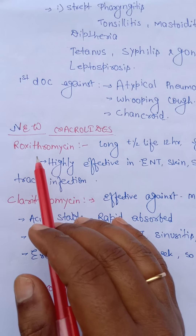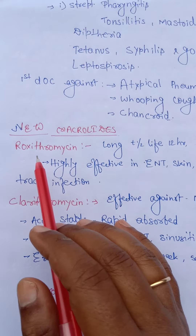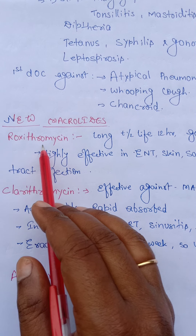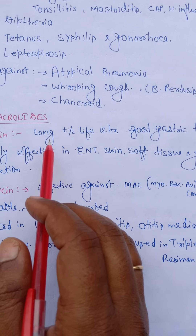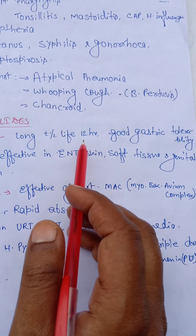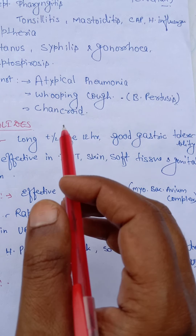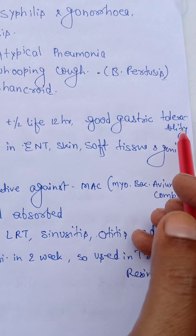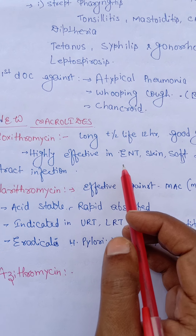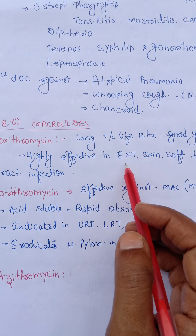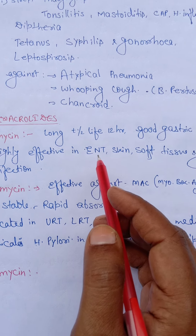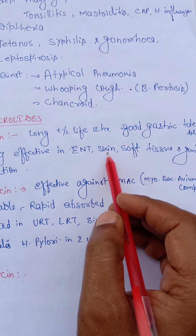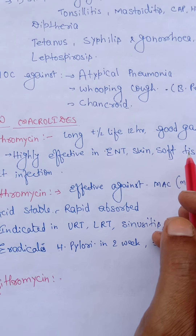The newer macrolide group includes roxithromycin, clarithromycin, and azithromycin. Roxithromycin is long-acting, with a plasma half-life of 12 hours, so it is given twice daily (BD), compared to erythromycin given six-hourly. Roxithromycin has good gastric tolerability and is highly effective in ENT problems such as otitis media, tonsillitis, and pharyngitis, as well as skin abscess, soft tissue, and genital tract infections.